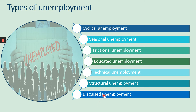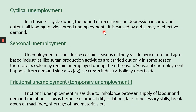The first type is cyclical unemployment. Cyclical unemployment exists during the downturn phase of the trade cycle in the economy.